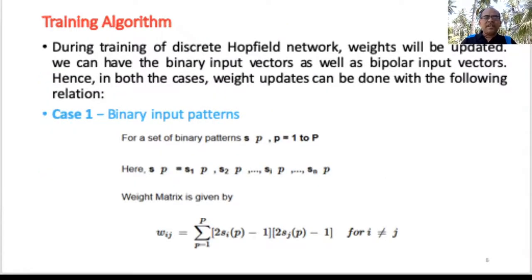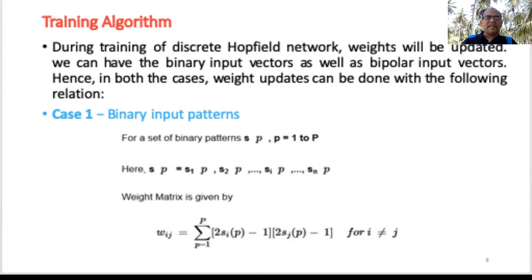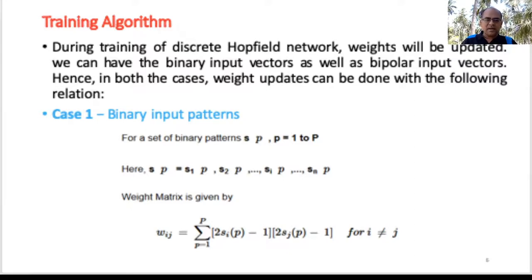During training of the discrete Hopfield network, the weights are updated. We may have binary or bipolar input vectors. For a binary input pattern, the weight update is computed as: w_ij = Σ (p=1 to P) [2·s_i(p) − 1][2·s_j(p) − 1], where i ≠ j.